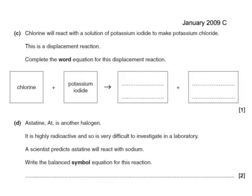Chlorine reacts with a solution of potassium iodide to make potassium chloride and iodine — we need to complete the word equation. So we're going to get potassium chloride and iodine. That's a displacement reaction.